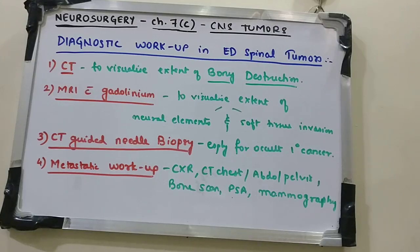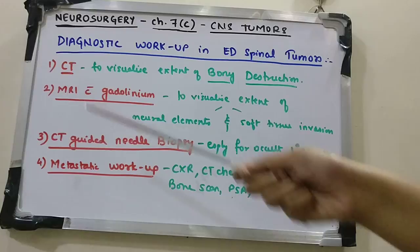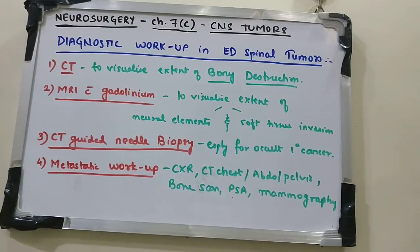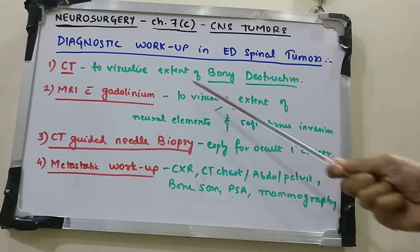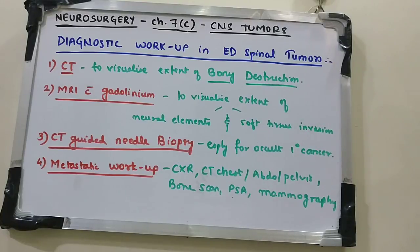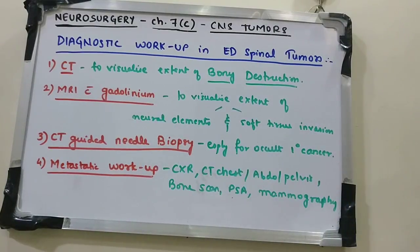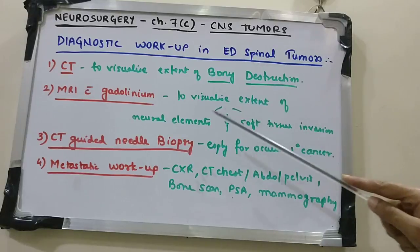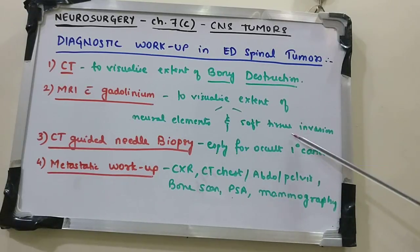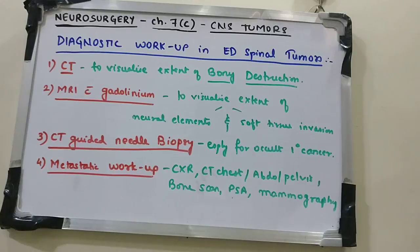For the diagnostic workup of extradural spinal tumors, CT scan helps visualize the extent of bony destruction. MRI with gadolinium contrast is the gold standard and visualizes the extent of neural element and soft tissue invasion. CT-guided needle biopsy is also recommended to establish the diagnosis, especially in cases of occult primary cancer.